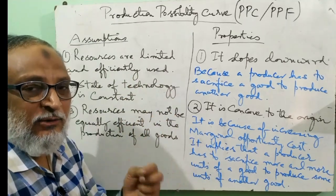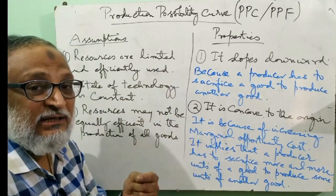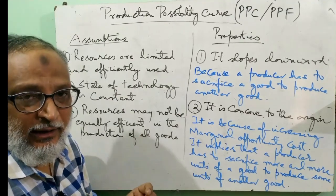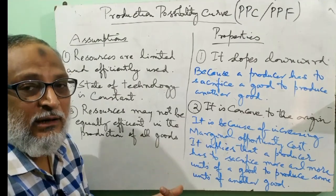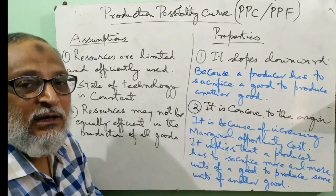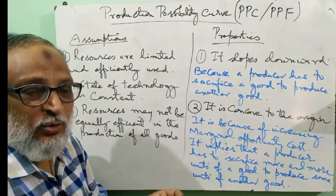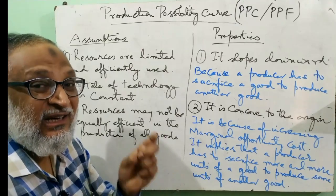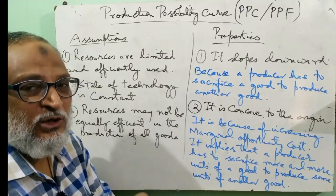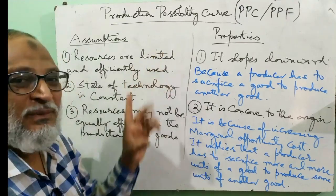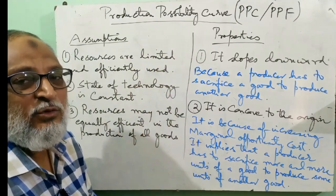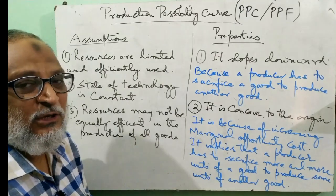Efficiently used means: if the farmer has 10 hectares of land, then he will use the whole 10 hectares — not 9 hectares, not 11 hectares, because he has exactly 10 hectares. So if the whole land of 10 hectares is used, then what will be the behavior of production? This is the PPC's definition: if we want to increase the production of one, we have to reduce the production of another.